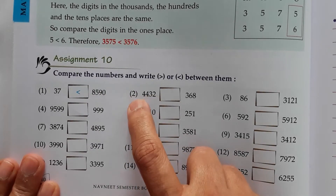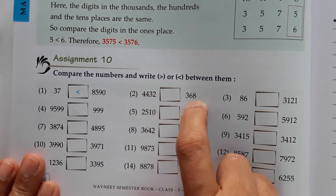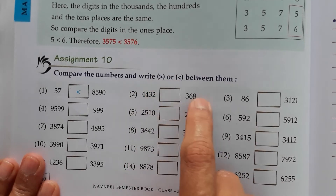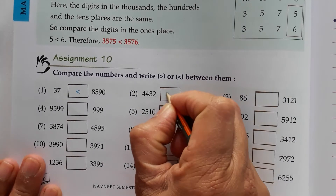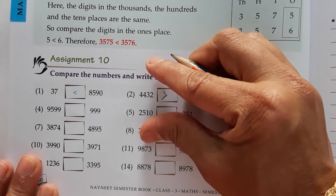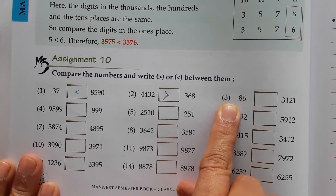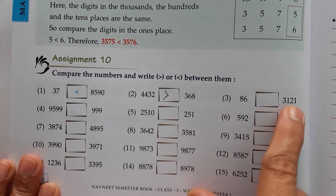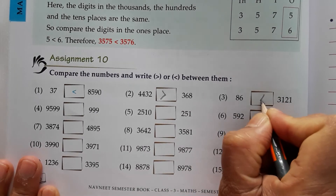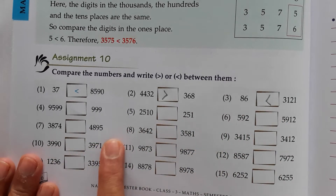Now we will see the next sum. This side has 4 digits, this side has 3 digits. So which is greater? This is a 4 digit number, this is a 3 digit number, so this is greater. The crocodile mouth should open towards the greater number — eat the greater number. The next one, the third one: this is a 2 digit number, this is a 4 digit number, so here also the 4 digit number is greater. You do the other numbers similarly.